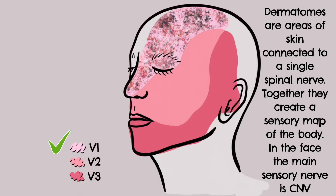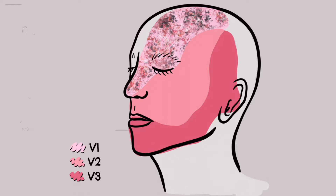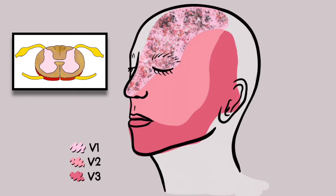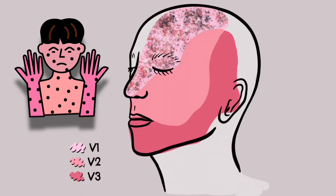Herpes Zoster Ophthalmicus occurs typically in older adults, but can present at any age, and occurs after reactivation of latent varicella zoster virus present within the sensory spinal or cerebral ganglia that had remained after a primary infection that typically causes chickenpox.